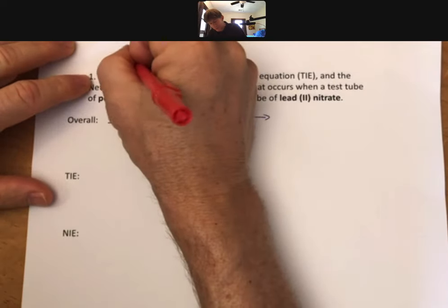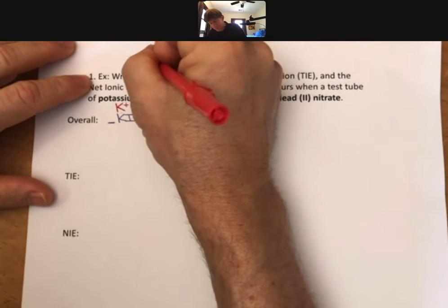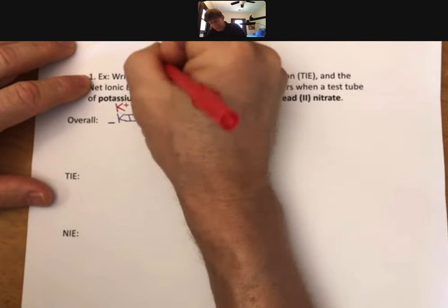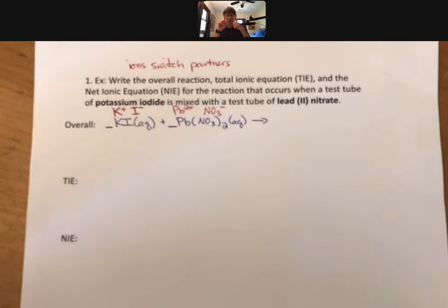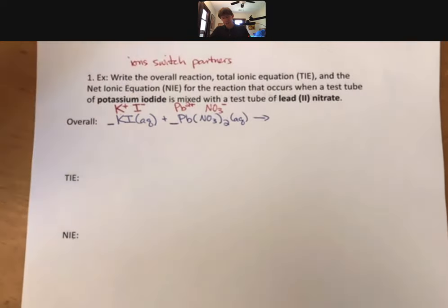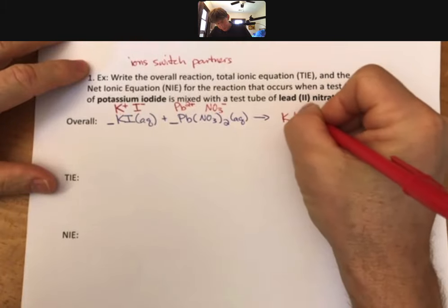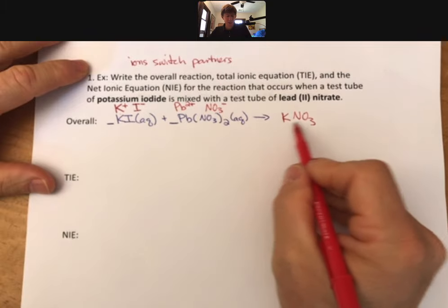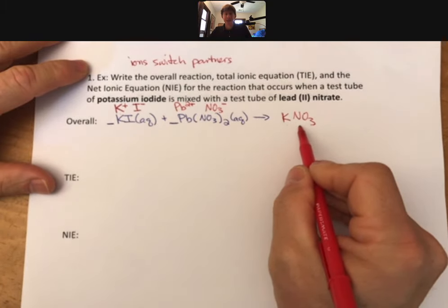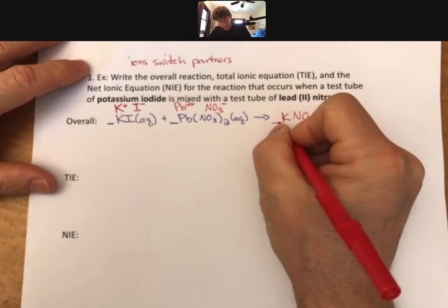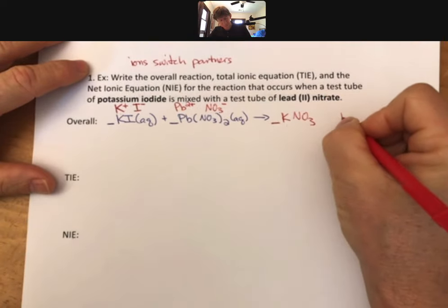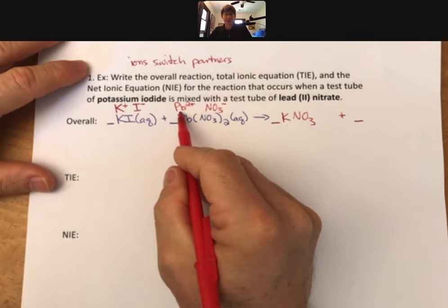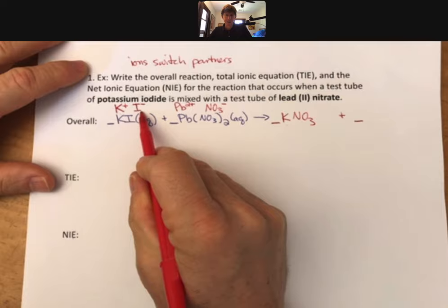The ions switch partners. And of course, the positive still has to go with a negative, and there's only one other negative. Since this is a +1 and this is a -1, in order to write this compound, it has to be KNO3, which gets a line, and Pb, which is 2+, and iodine, which is just -1.